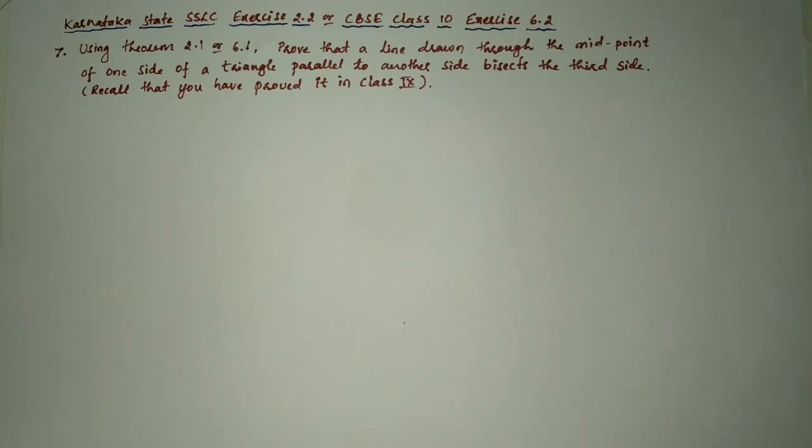Using theorem 2.1 or 6.1, prove that a line drawn through the midpoint of one side of a triangle parallel to another side bisects the third side. Recall that you have proved it in class 9.